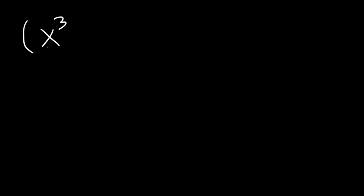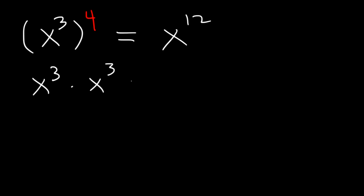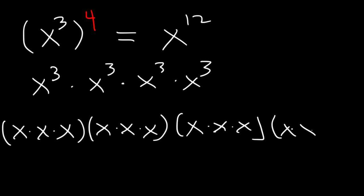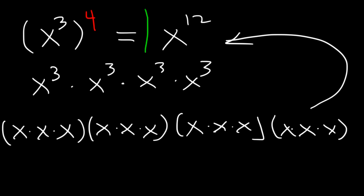What is x to the 3rd raised to the 4th power? Whenever we raise one exponent to another, you need to multiply. It's going to be 3 times 4, which is 12. x to the 3rd raised to the 4th power means you're multiplying 4 x cubed values, and each x cubed is basically 3 x variables multiplied together. If you count all the x variables, you have a total of 12, and so that's why it's equal to x to the 12th.